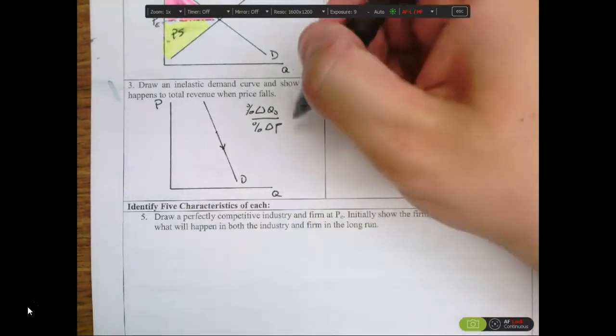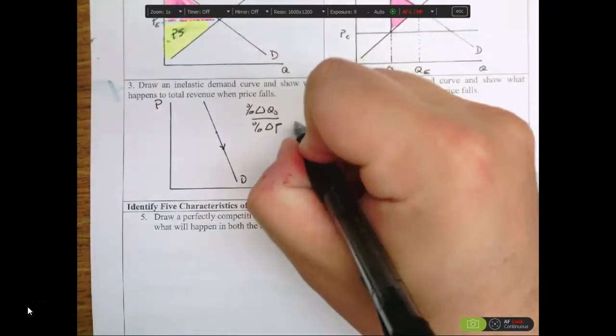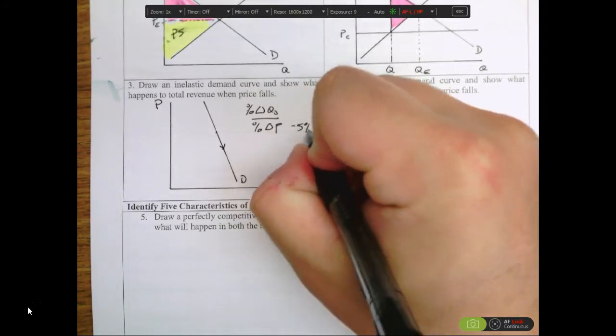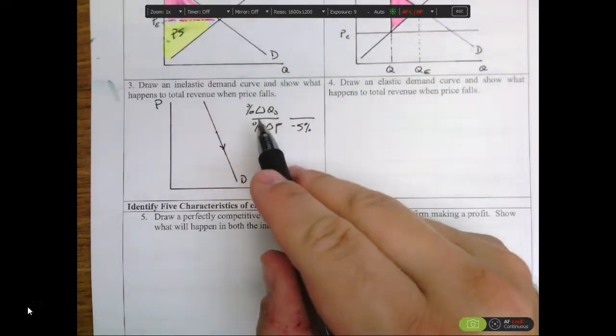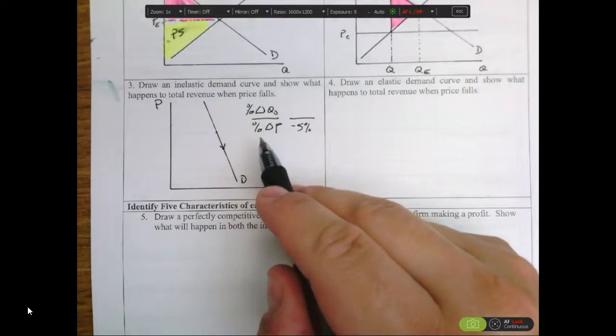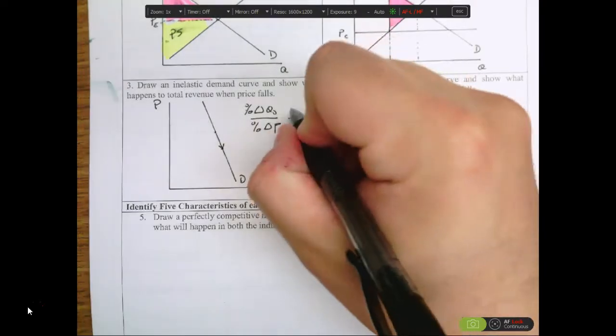So if it's inelastic, we're going to lower the price, say by five percent. If it's inelastic, the change in quantity demanded will be less than the change in price, so maybe we're increasing sales by two percent.